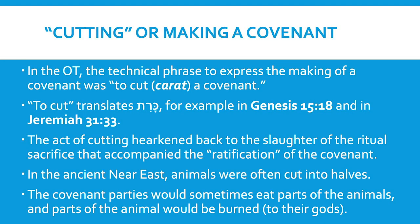This concept of the cutting of a covenant — the making of a covenant being really the cutting — harkens back to the slaughter of ritual sacrifices that accompanied the ratification of the covenant. Now let's turn back to Genesis chapter 15, one of my favorite chapters in all the Bible. This chapter describes the covenant God makes with Abraham — the covenant he then reconfirms with Abraham's son Isaac and then again with Abraham's grandson Jacob.